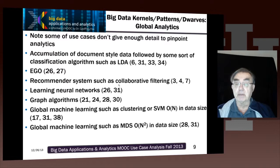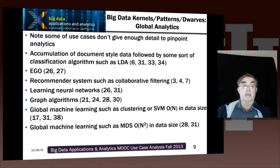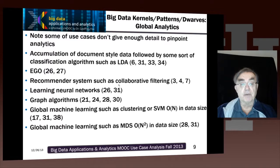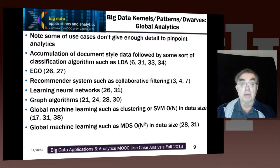We can give some details of the machine learning used. Most of the use cases don't actually give enough detail to pin down the analytics. There are algorithms like latent dimension allocation, which are used for classifying documents in an unbiased fashion. Large-scale optimization is an important class. Recommender systems started in information retrieval and e-commerce, but are now being built into lots of different applications. Learning neural networks are a particular way of optimizing automatically from big data, and graph algorithms are often the most efficient way of solving problems.